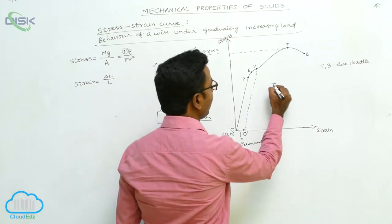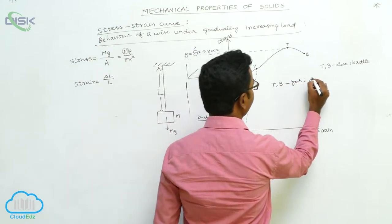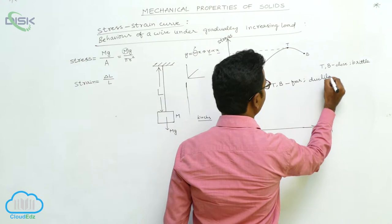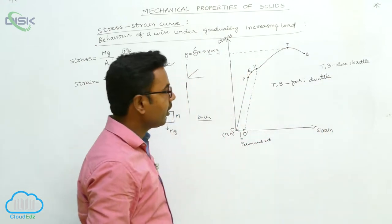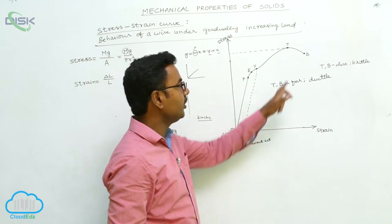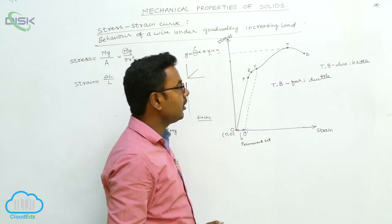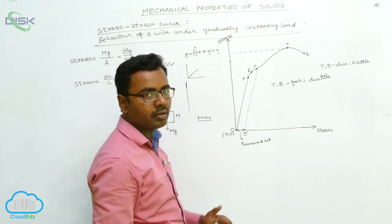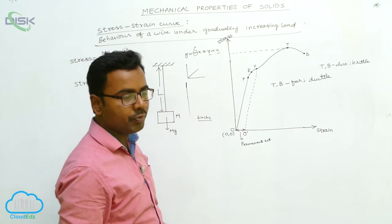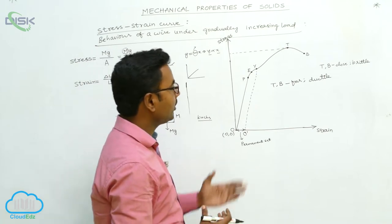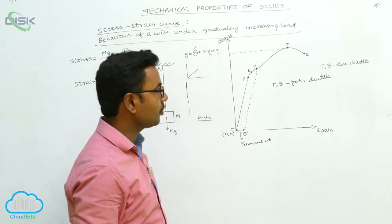If the tensile point and breaking point are far from each other, such materials are called ductile materials. When we plot a graph for ductile materials, we observe that the tensile point and breaking point are far apart, meaning after crossing the tensile point the wire continues to elongate up to a certain point before breaking.